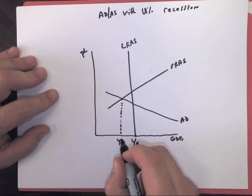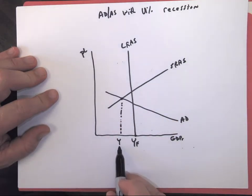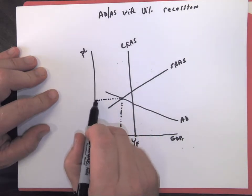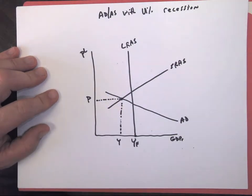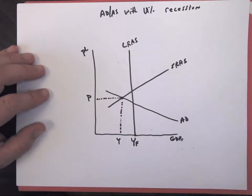So we're at a short-run equilibrium right here, and we're producing this much GDP at point Y. That's called our current output, and we're producing at this amount of price level. So when we have a recession, we need things to get us out of it.